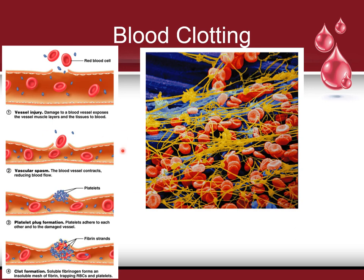With blood clotting, if you have an injury — say a cut on your arm — damage to a blood vessel exposes the vessel muscle layers and tissues to the blood. The blood vessel contracts to reduce blood flow, then platelets form a plug by adhering to each other and the damaged vessel. Soluble fibrinogen then forms fibrin strands that come together and trap red blood cells and platelets so we don't bleed out.